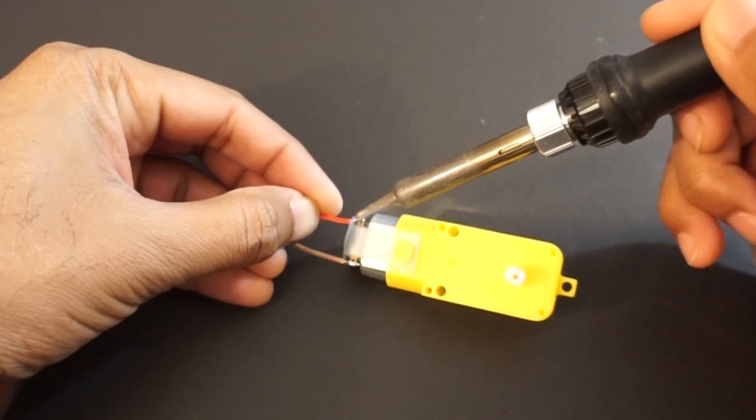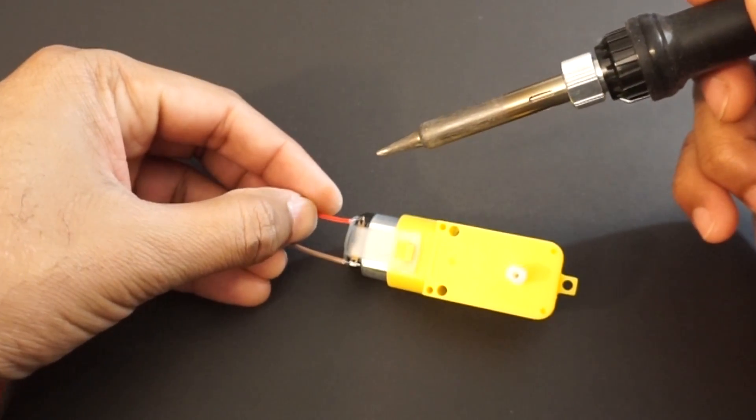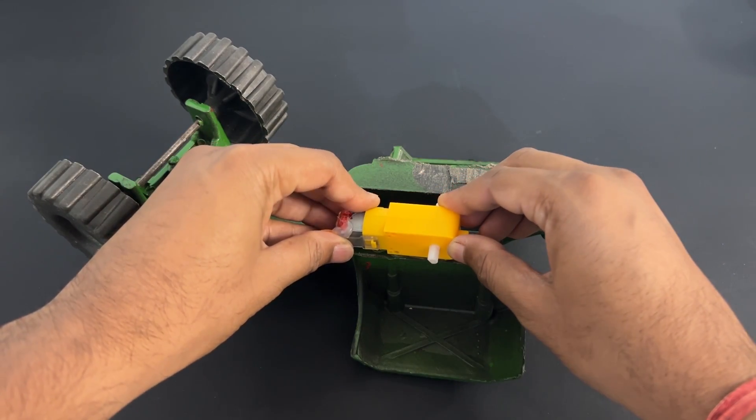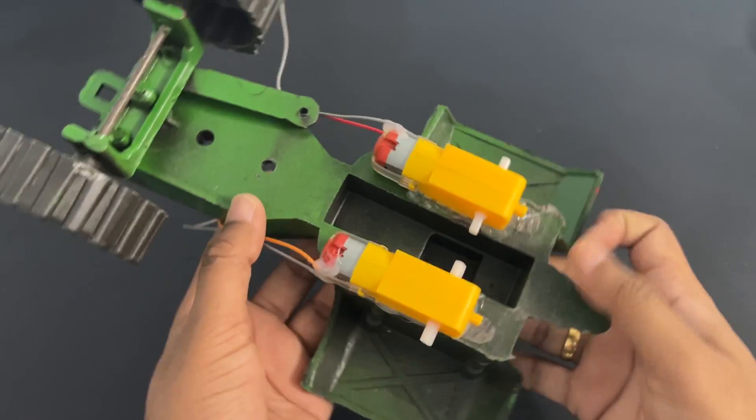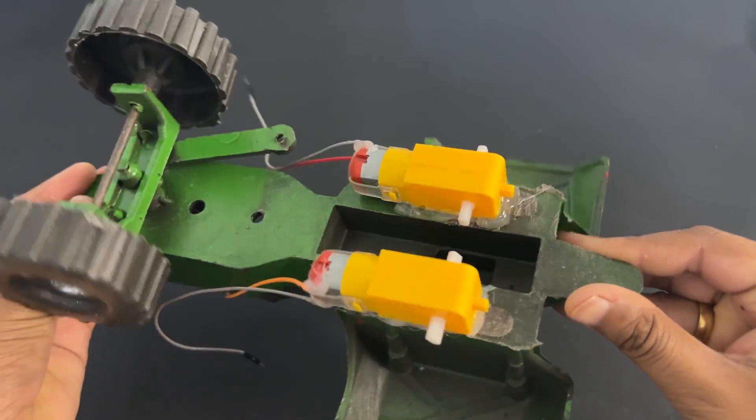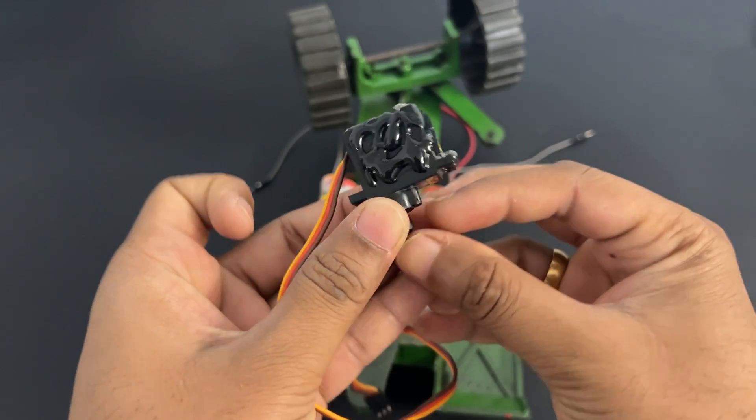Let's solder wires to gear motors. Mount two motors on chassis using glue gun.